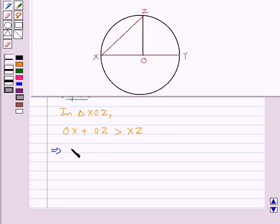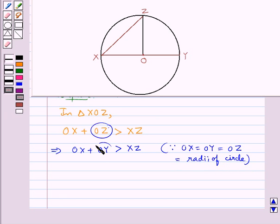Now this would further give us OX plus OY is greater than XZ. Since we have OX is equal to OY is equal to OZ, since they are the radii of the circle, so instead of OZ, we have written OY.